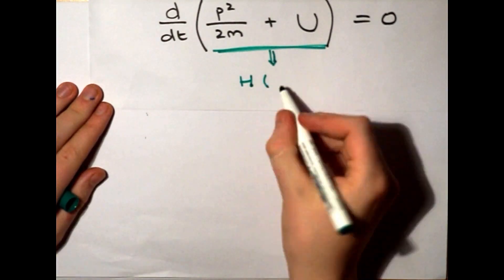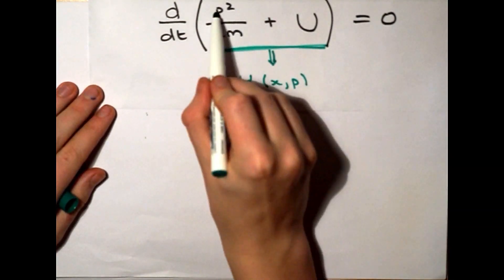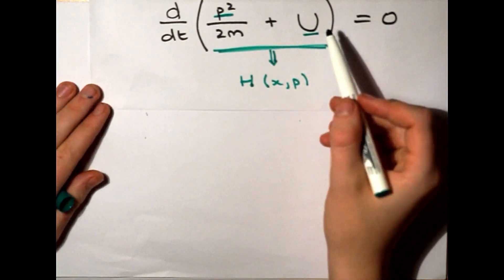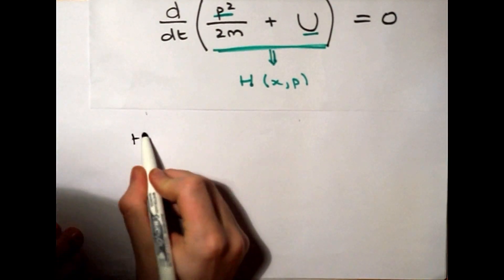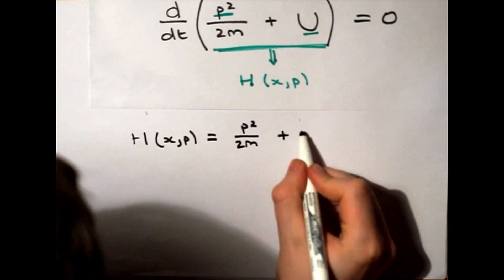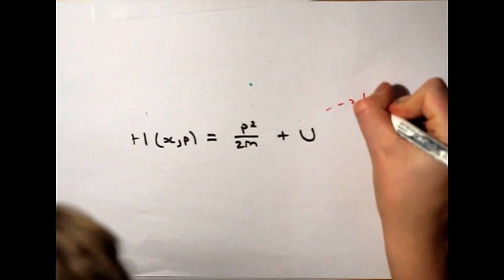And what we have is a derivative of a two variable function of position and momentum. This function is called the Hamiltonian, and it is a profound and useful equation in physics.